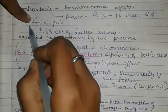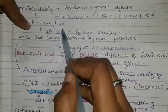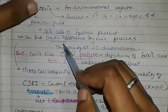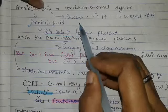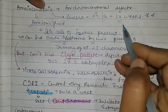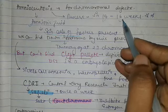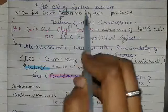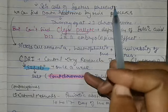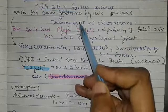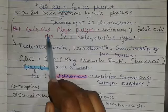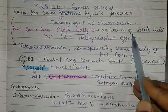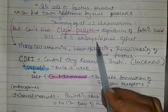Amniocentesis involves sampling amniotic fluid, which contains skin cells from the fetus. However, amniocentesis cannot detect cleft palate. Cleft palate cannot be found through amniocentesis. Deficiency of folic acid causes embryological effects and is also not detectable this way.